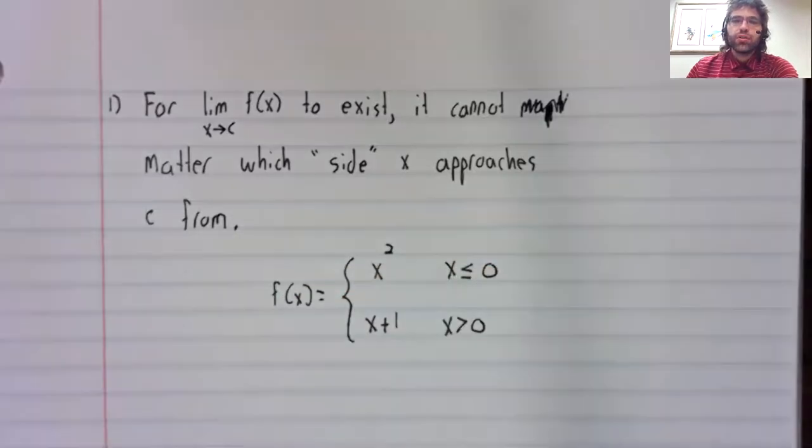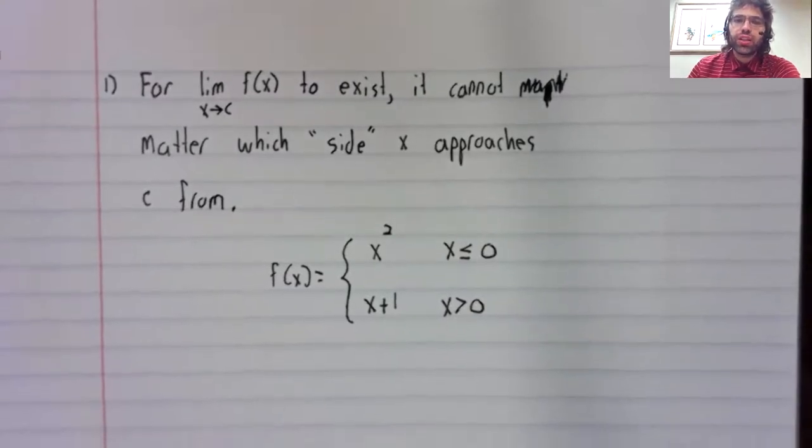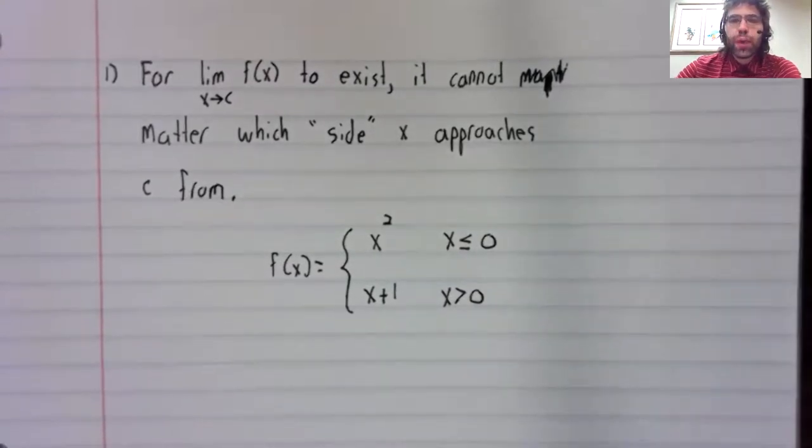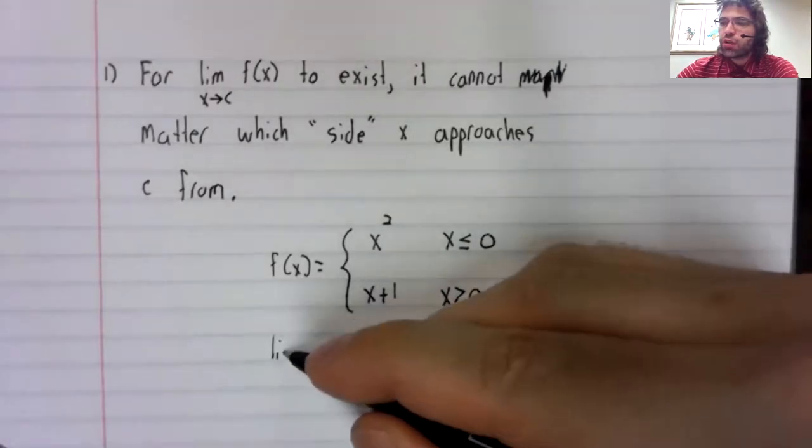To illustrate that, let's look at a piecewise defined function. X squared when X is less than or equal to zero, X plus one when X is greater than zero.